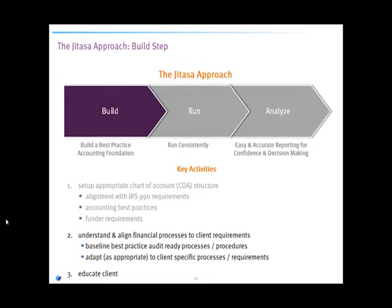Once you set the right chart of accounts structure, it's important to make sure you have the right financial processes tied back to your nonprofit requirements. In our build stage, once we have the COA in place, we spend time with the client to understand their requirements and current processes and develop a go-forward model. That includes baseline best-practice audit-ready requirements, but also tailored client-specific requirements. You want that balance — meeting standards and best practices while accommodating the unique differences of your nonprofit.